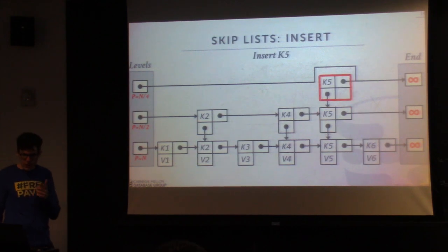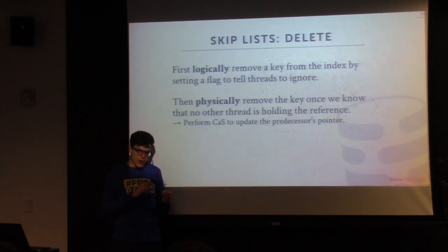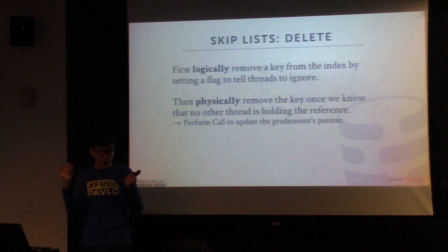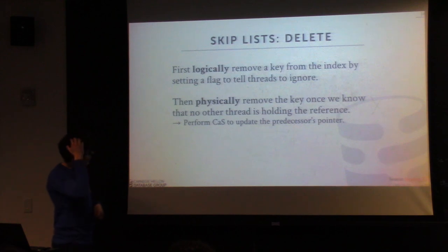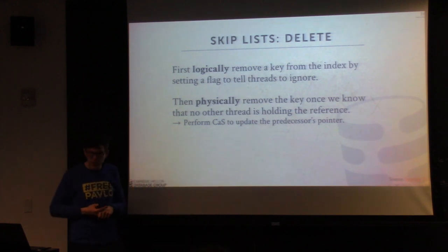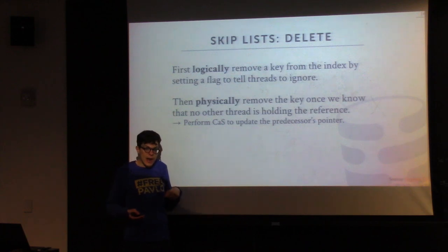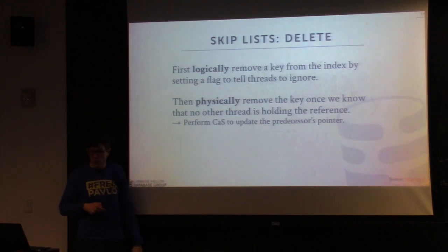Now let's talk about deletions. We do deletions in two phases. The first phase is a logical delete: we set a flag inside the node that tells other threads to ignore this entry — it's still there, still being pointed to, but as you scan and come across it, you check the flag and if it's set to deleted, you ignore it. At some later point, we'll physically remove the key once we know no other thread could possibly be holding a reference to our deleted node. We'll talk about how we do this in the garbage collection phase later.